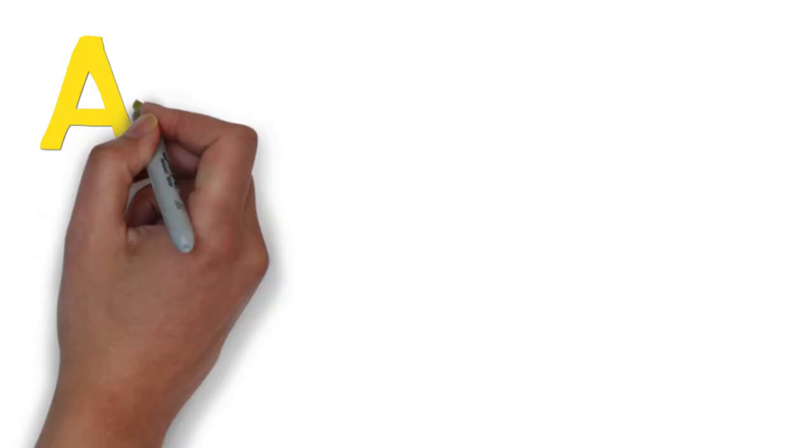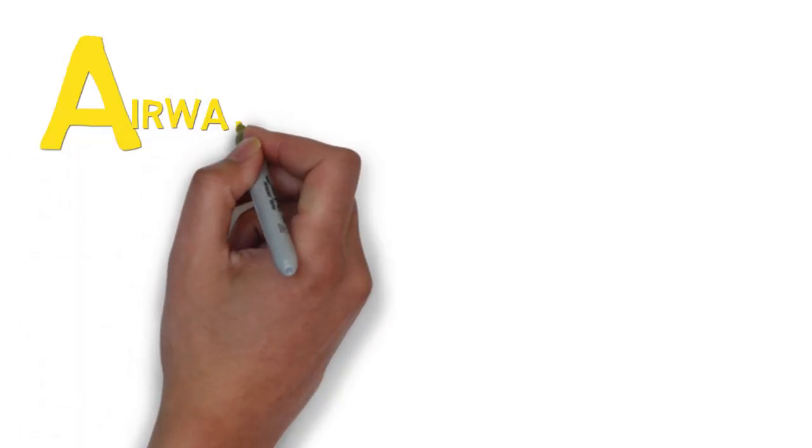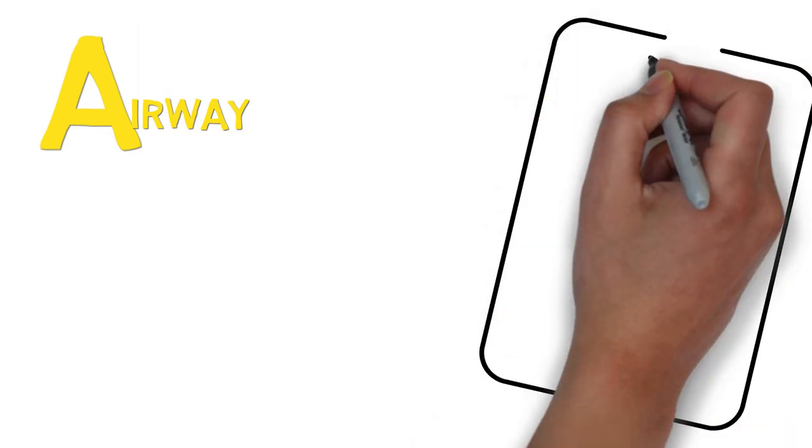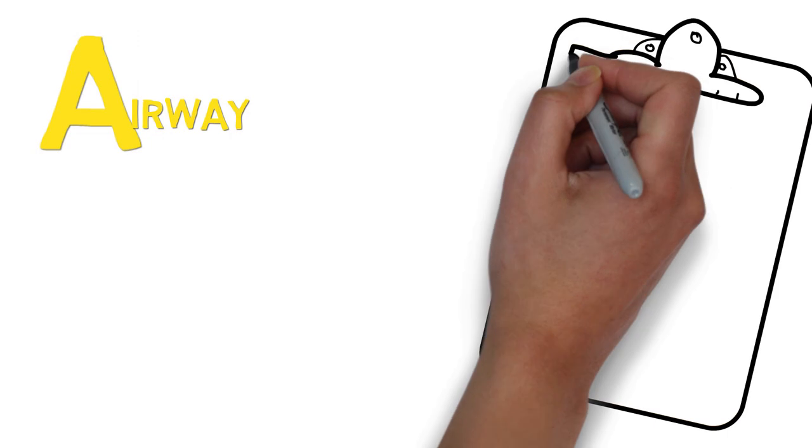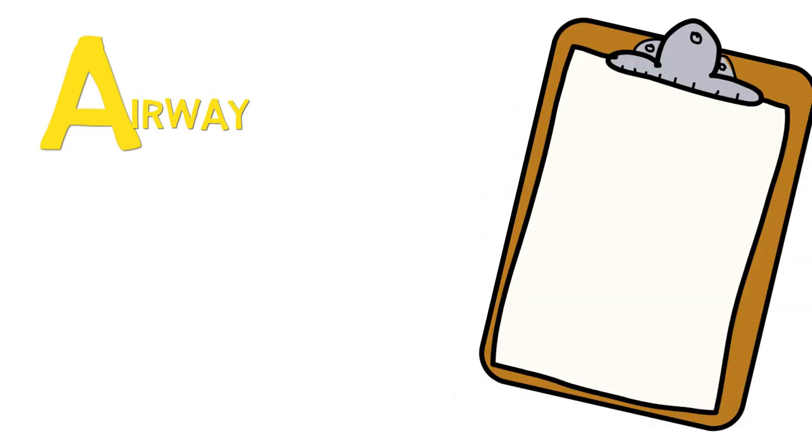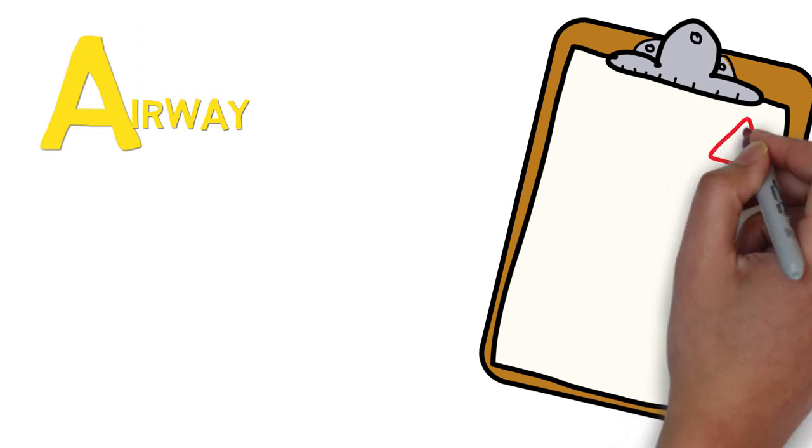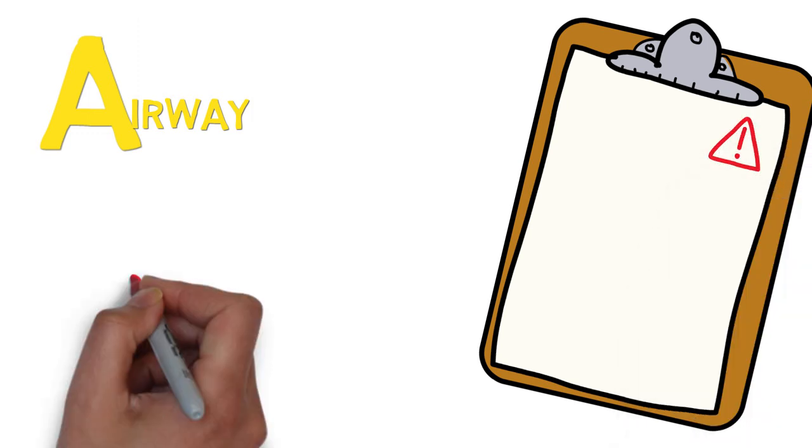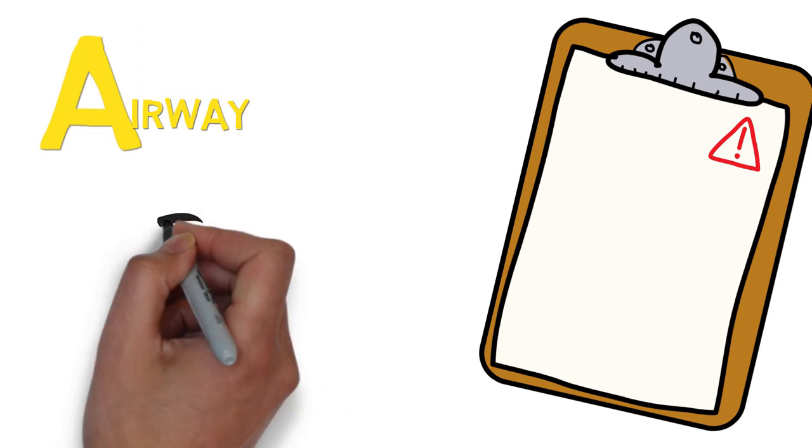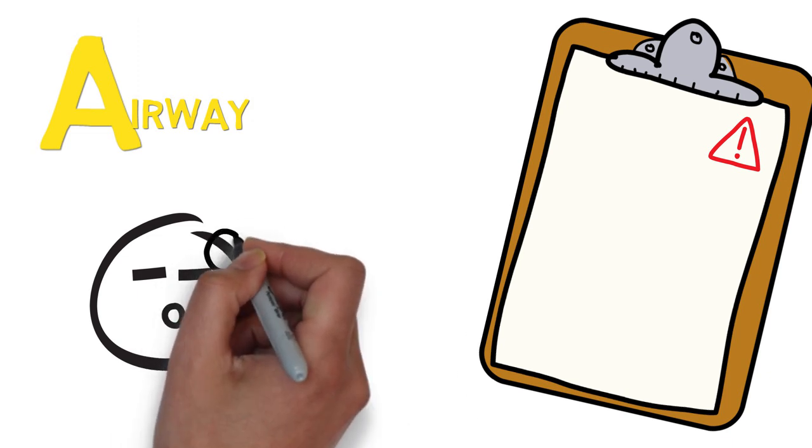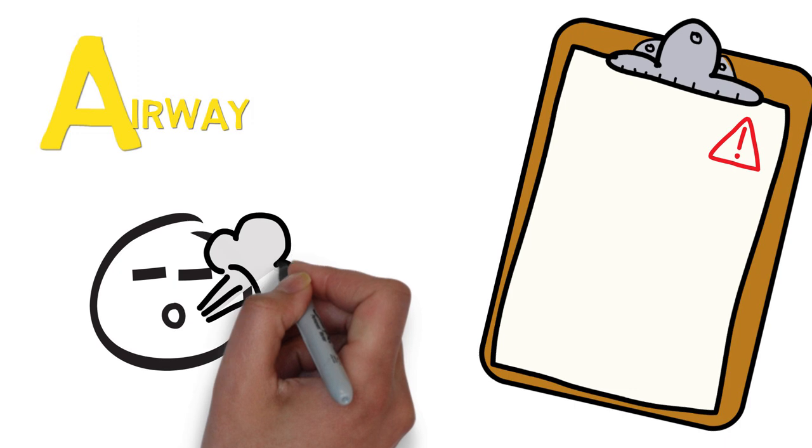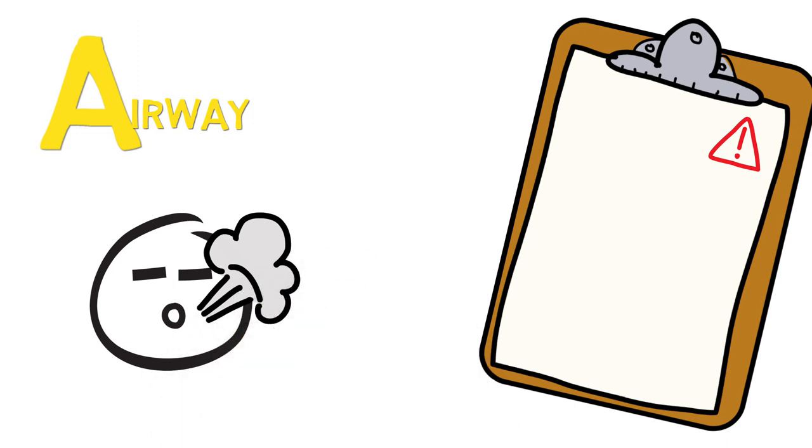A is for airway. No matter what's causing your patient to be ill, if their airway is blocked, it won't matter that you've chosen the correct antibiotic for the urinary tract infection. Immediate action is required when the airway is blocked or threatened, meaning it's either partially blocked, or at risk of becoming so. For a patient to be able to keep their airway open, you need that patient to have a certain level of consciousness.